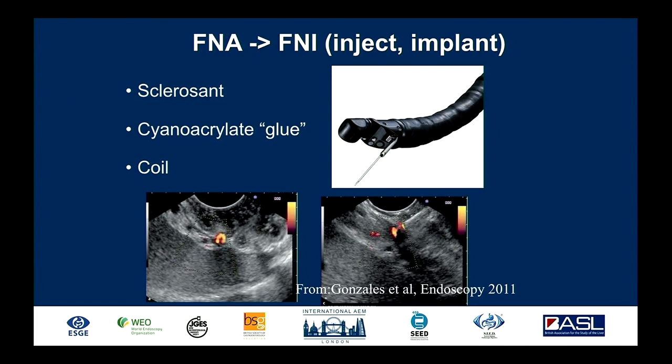So instead of aspirating, we're doing the reverse — we're injecting or implanting. We could inject a solution: it could be a sclerosant, it could be cyanoacrylate glue, and it could be a device — a coil. And when we place a wire through an FNA needle, that's also a device.